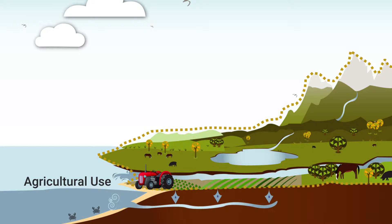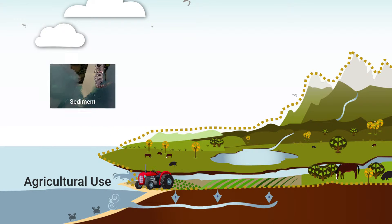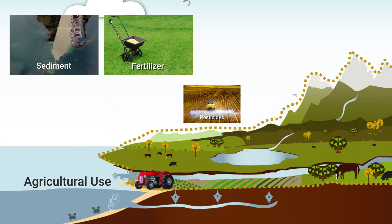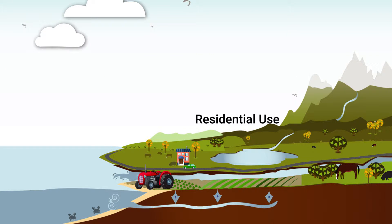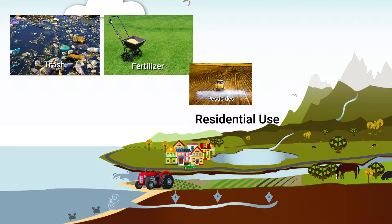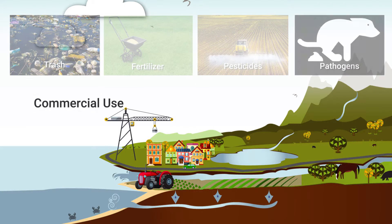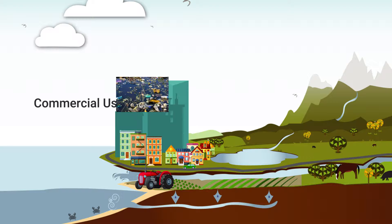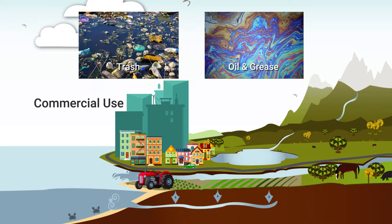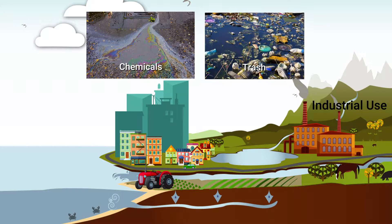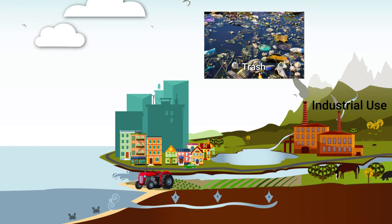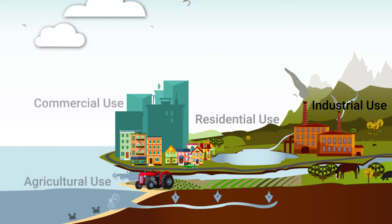Improper agricultural uses lead to increased sediment, fertilizer, pesticide, and pathogen pollution. Residential use increases the amount of trash, fertilizers, pesticides, and pathogens. Commercial areas lead to additional trash, oil, and grease in the water. And industrial areas lead to more pollution of chemicals and trash. Regardless, all types of pollution can come from any of these land uses.